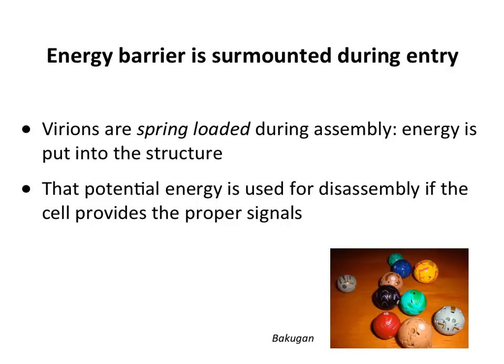The energy barrier the particle has to overcome is supplied by signals from the cell — the right receptor, the right intracellular environment. It could be low pH or a protease that changes the particle. The virus doesn't want to give up its genome in the wrong cell, so it depends on very specific cues. We say virions are spring-loaded: energy is put into the structure during assembly, and on the right signal the virion pops open and gives up its genome. A good analogy is these Japanese toys, Bakugan — inside each ball is a character, and when the ball rolls over a piece of metal, it springs open.